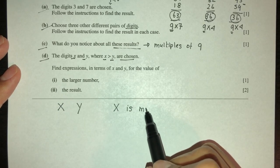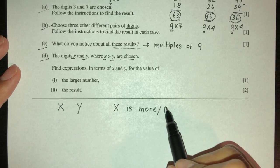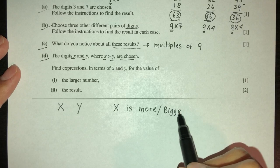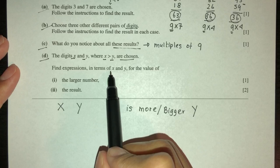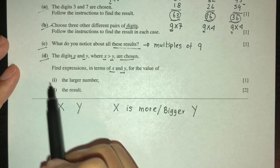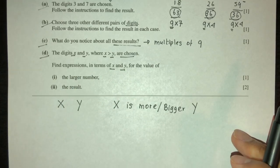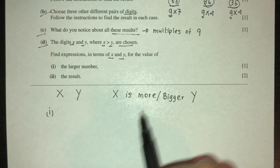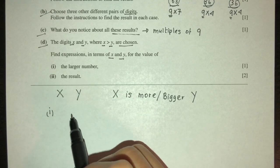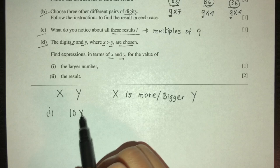Now part one: find the expression in terms of x and y for the larger number. So the larger number is pretty easy. Since x is more, x has to be in front, so we have to do 10x plus y.